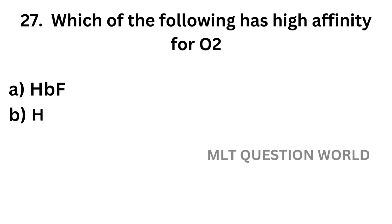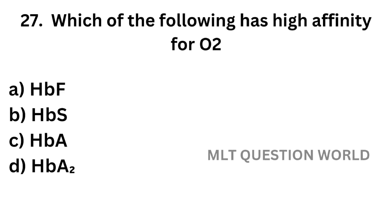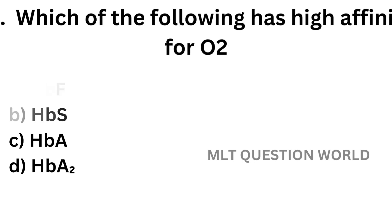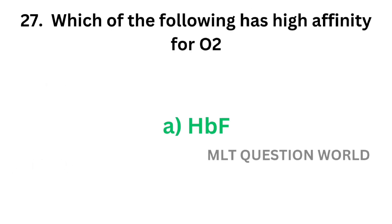Question number 27. Which of the following has high affinity for oxygen? Option A, fetal hemoglobin or HbF; Option B, sulfhemoglobin or HbS; Option C, adult hemoglobin or HbA; Option D, HbA2. The correct answer is Option A, HbF. Fetal hemoglobin has high affinity for oxygen.